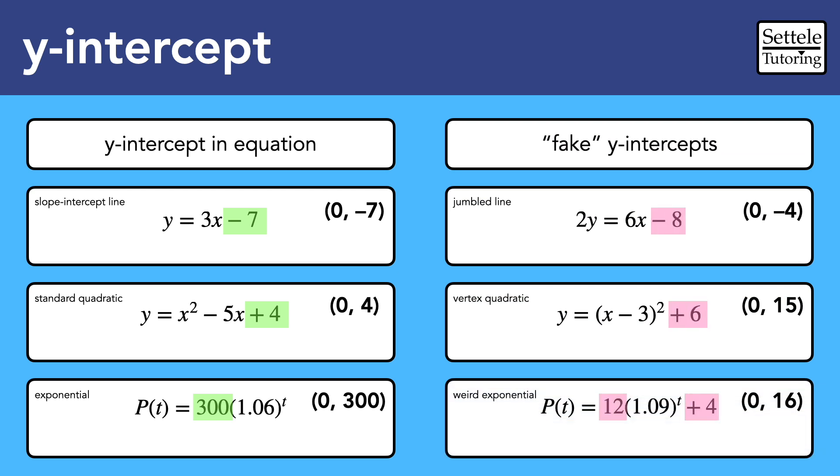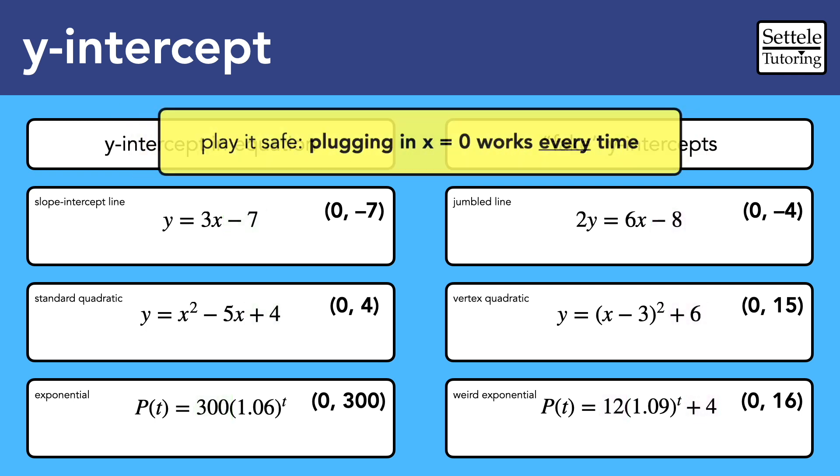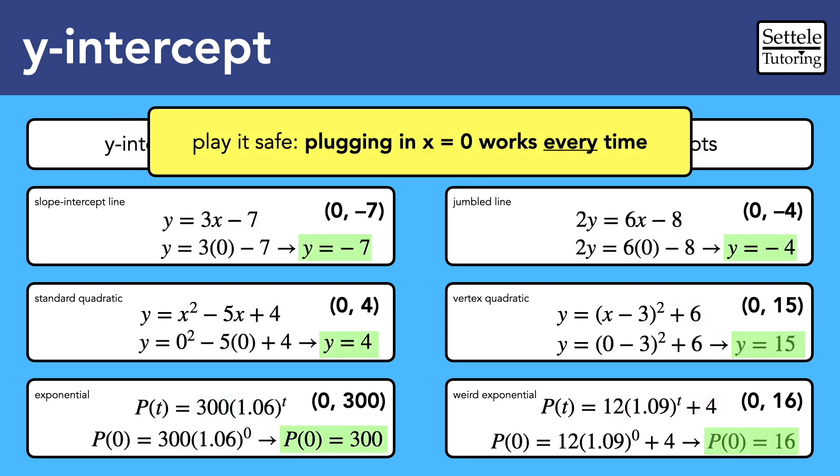But be careful, other equations have fake y-intercepts. They look like shortcuts, but they're actually traps. The safe bet is to just plug in 0 for x and solve for y.